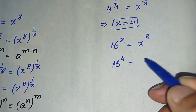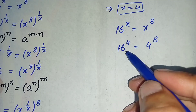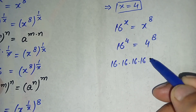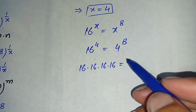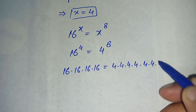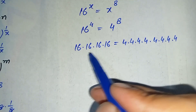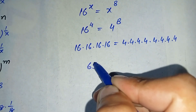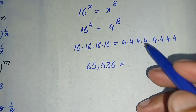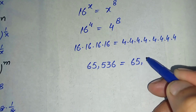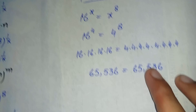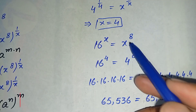16 raised to power 4 means multiplying the number 16 four times, and 4 raised to power 8 means multiplying the number 4 eight times. By multiplying 16 four times we get 65,536, and by multiplying 4 eight times we also get 65,536. Both sides are the same, which confirms that x equals 4 is the exact and correct root of this exponential equation.